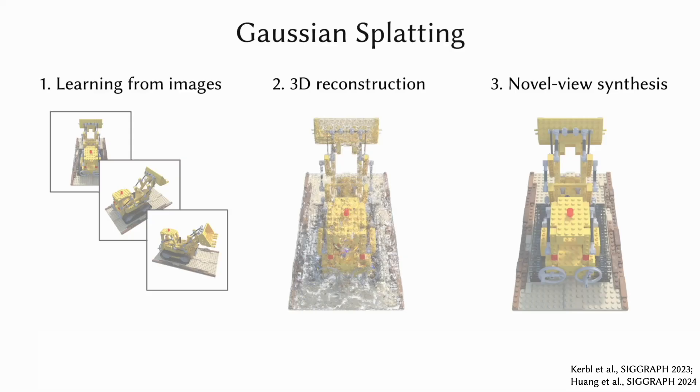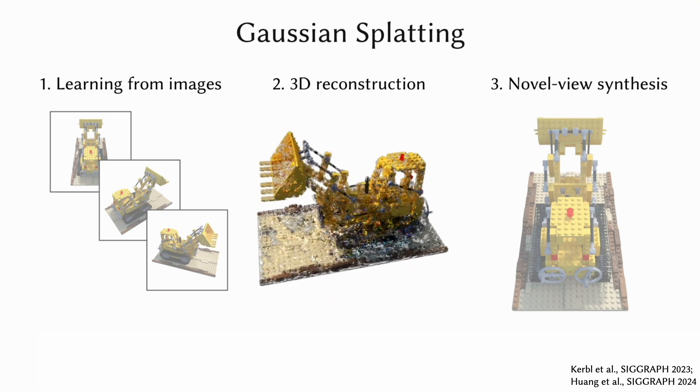Recently, advances in neural rendering have made great strides in improving the quality of 3D reconstruction and novel view synthesis. Gaussian splatting has emerged as the state-of-the-art neural rendering method that can turn a collection of images of a scene into a set of Gaussians for novel view synthesis.